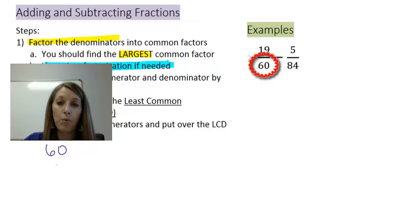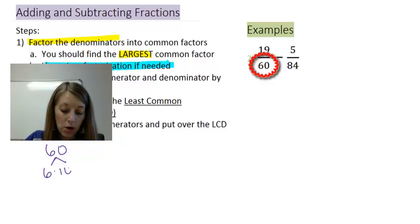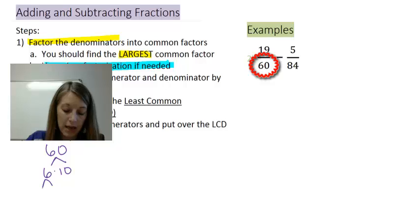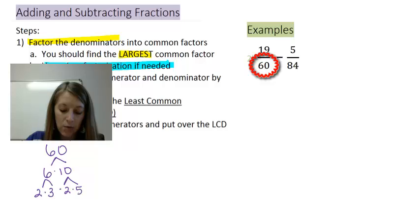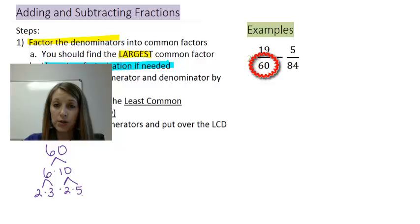I'll take 60 and break it down. I'll start with 6 times 10. Neither of those is prime, so I keep breaking them down: 6 is 2 times 3, and 10 is 2 times 5. Now I'm only left with prime numbers, so I can't break 60 down any further. The prime factorization of 60 is 2 times 2 times 3 times 5.